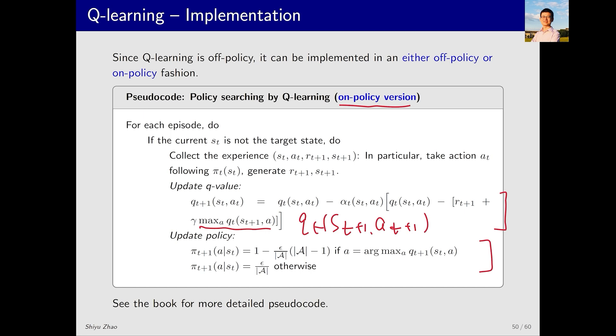The process is as follows. Start with an initial policy. Use this policy to generate data. Update the Q-value with the data. Improve the policy based on the Q-values using an epsilon-greedy approach. Repeat.